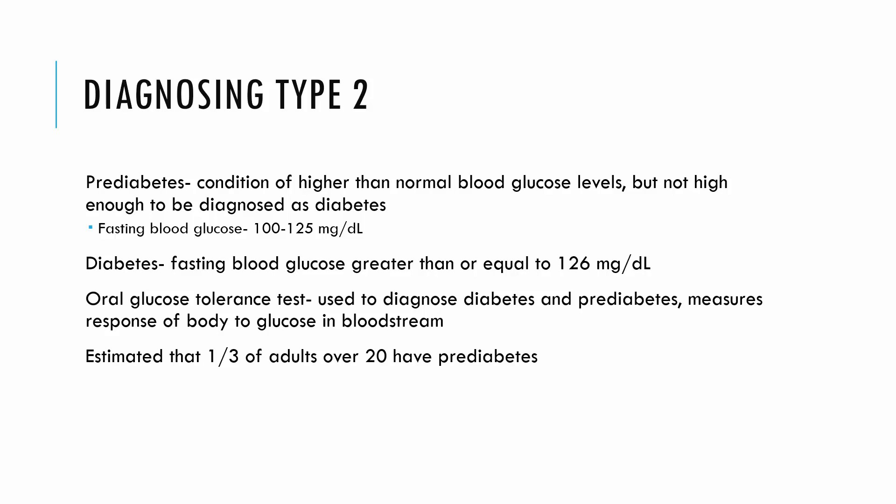To diagnose diabetes, we look at pre-diabetes — a condition where blood glucose is higher than normal but not quite high enough for a diabetes diagnosis. Normal fasting blood sugar is about 70 to 100 milligrams per deciliter. Pre-diabetes is about 100 to 125 milligrams per deciliter. Diabetes is typically a fasting blood glucose greater than or equal to 126 milligrams per deciliter. You would never diagnose diabetes on one single high reading — other tests like an oral glucose tolerance test are used as well.